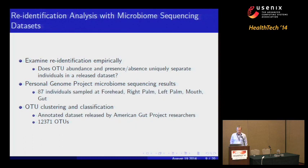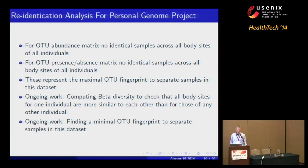The dataset I examined was from the Personal Genome Project, which released microbiome sequencing results. It had 87 individuals sampled at the forehead, right palm, left palm, mouth, and gut. The American Gut Project analyzed the dataset, performed OTU clustering classification, and found approximately 12,000 OTUs present across the samples. My work found that for the OTU abundance matrix, there were no identical samples across all body sites of all individuals — each column vector was unique. Changing raw counts to presence-absence also yielded no identical samples, representing the maximal OTU fingerprint to separate samples in this dataset.